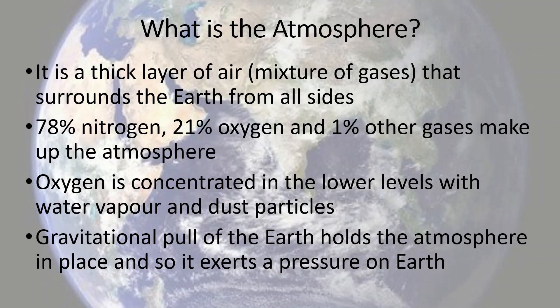In the atmosphere, we have around 78% nitrogen and 21% oxygen. The remaining 1% is made up of various gases like argon, carbon dioxide, ozone, helium, and hydrogen. The lower layers of the atmosphere have a higher concentration of oxygen, as well as water vapor and dust particles.